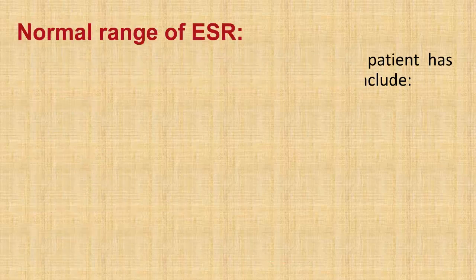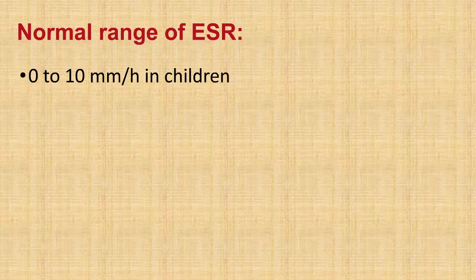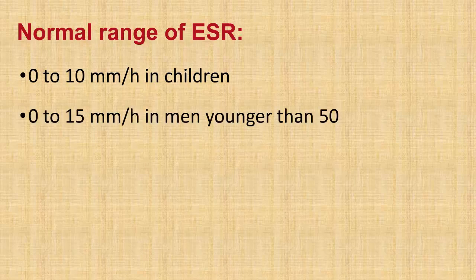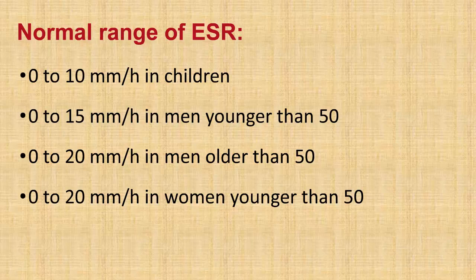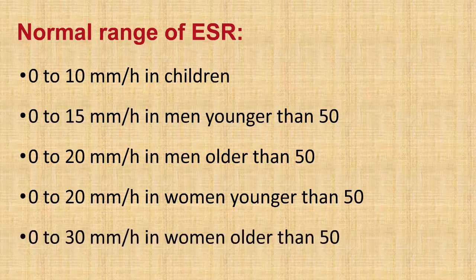Normal range of ESR: 0–10 mm per hour in children; 0–15 mm per hour in men younger than 50; 0–20 mm per hour in men older than 50; 0–20 mm per hour in women younger than 50; 0–30 mm per hour in women older than 50.